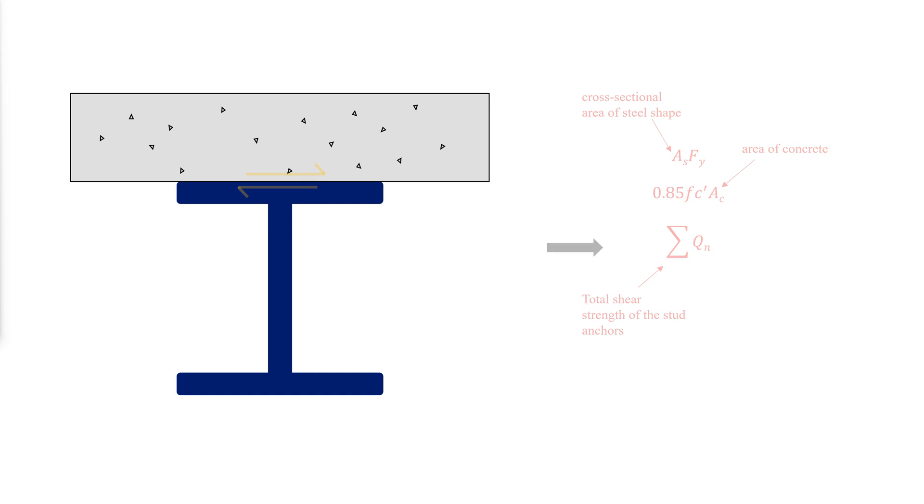We are going to show an example of a fully composite member in this video. Let's consider the same previous beam. We will compute the available strength of the composite beam, assuming that sufficient stud anchors are provided for full composite behavior.